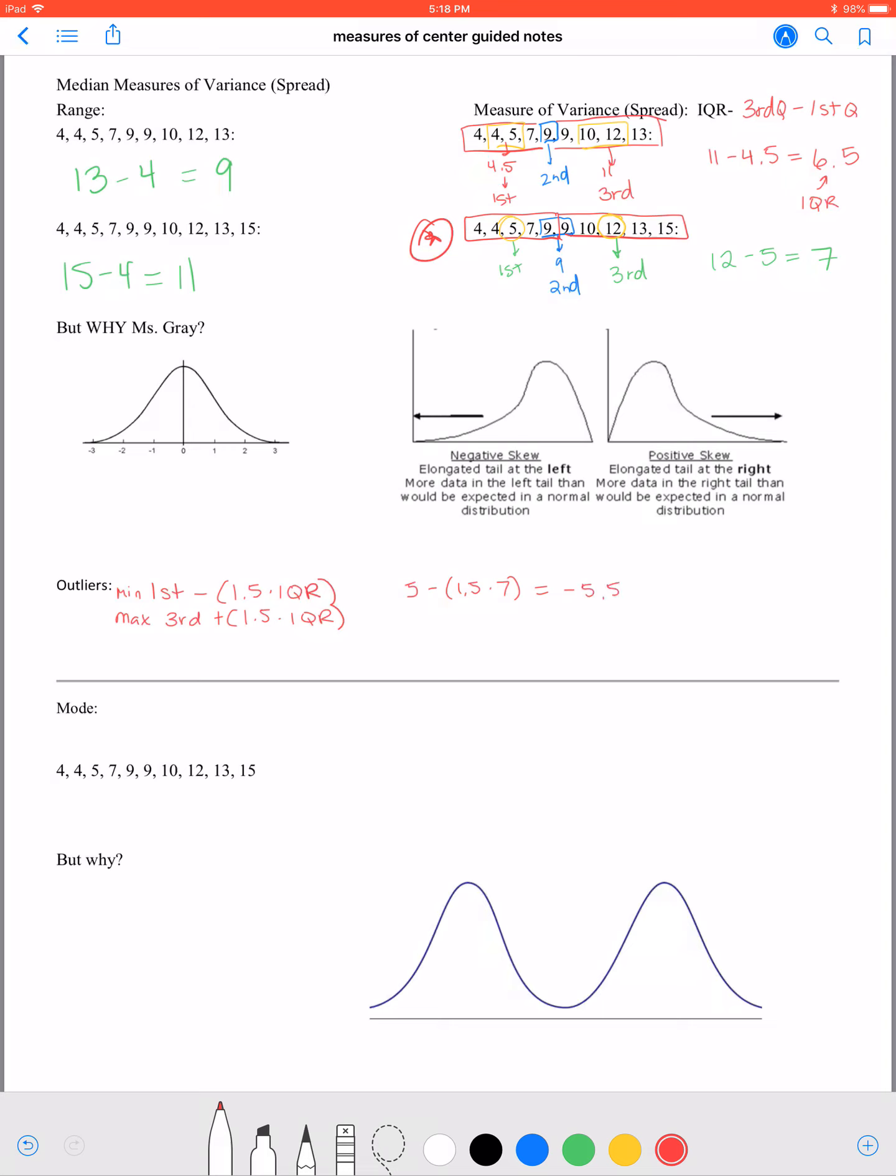And then I'm going to take our third quartile, which is 12, and add that 1.5 times 7, which is 22.5. What I'm saying here is any data outside of these two values, so if it's lower than negative 5.5 or greater than 22.5, will be considered an outlier.